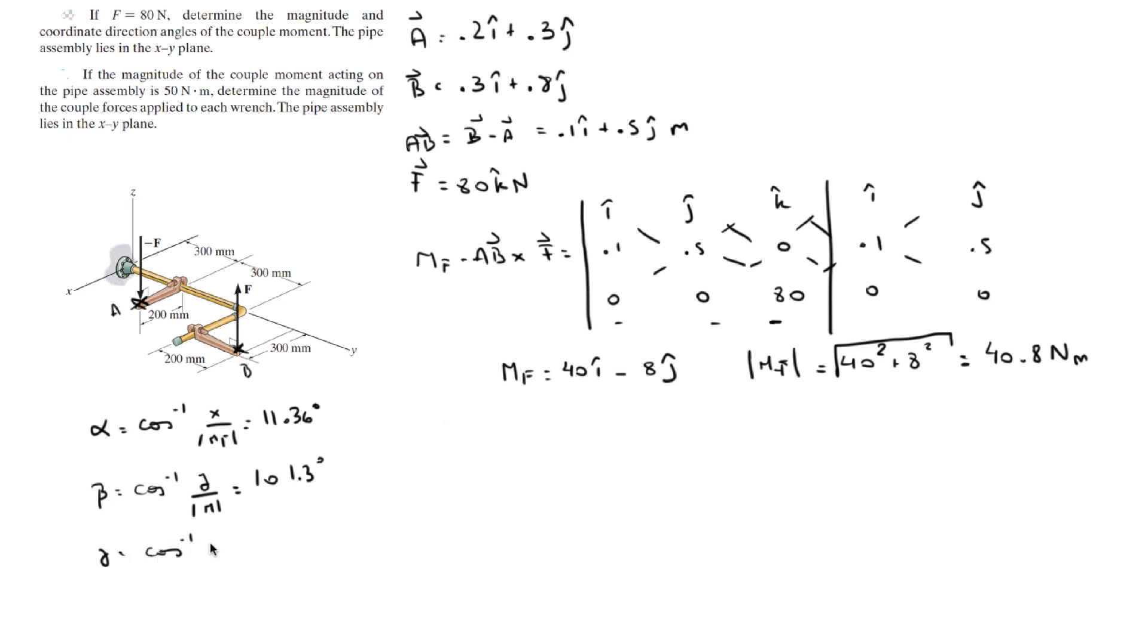And gamma is equal to the cosine inverse of the z component over the magnitude, which is equal to 90 degrees, because it's 0. So, these are the coordinate direction angles, and this is the magnitude. The second problem tells you,